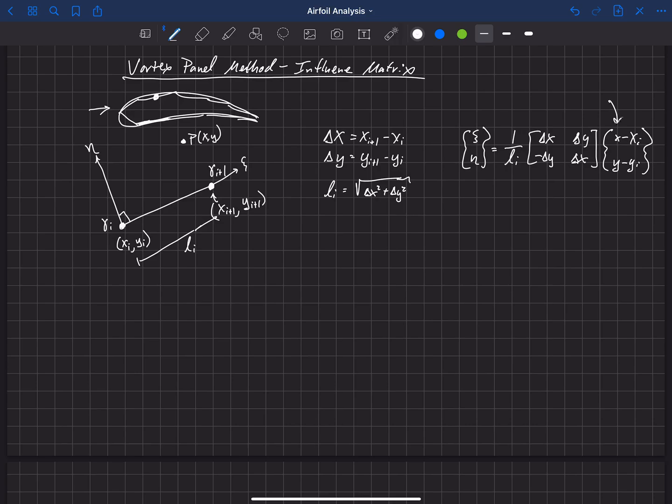So 1 over li times delta x delta y minus delta y and delta x multiplied by x minus xi and y minus yi. So this guy back here is the distance of that point, basically, to the origin of that panel in x and y. And then we're going to use this matrix here and multiply that through. And what it gives us is the xi and eta values of that point. So I'm going to say that this point is now at point xi comma eta, where we've computed that from this equation over here.